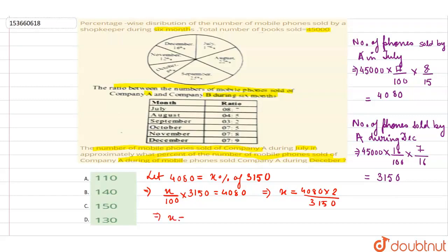Or x is equal to 129.5 which we can write as 130. So the required percentage is equal to 130.